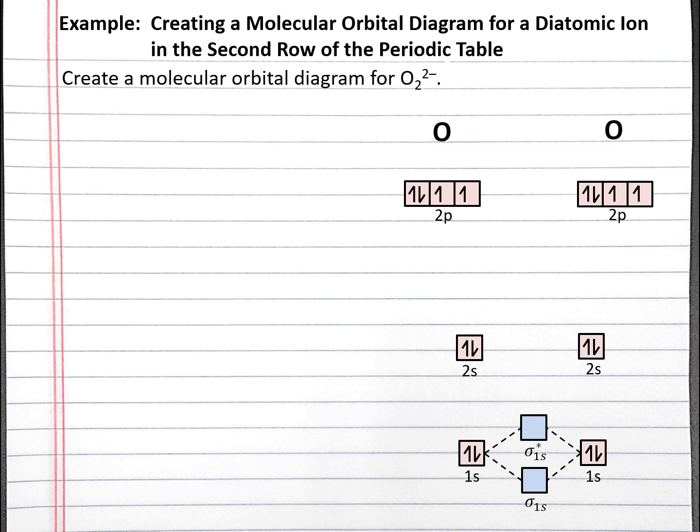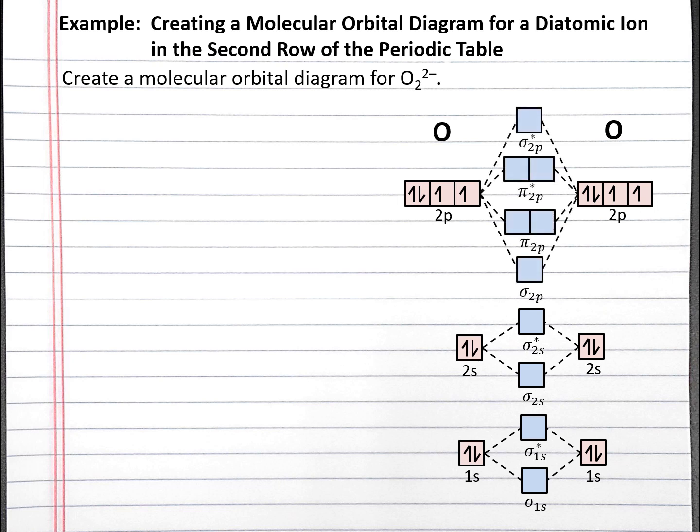We can also combine the 2s orbitals from both oxygen atoms to produce the sigma 2s bonding and sigma 2s antibonding molecular orbitals. When we combine the three 2p orbitals from both oxygen atoms, we create six new molecular orbitals: one sigma 2p bonding, one sigma 2p antibonding, two pi 2p bonding, and two pi 2p antibonding molecular orbitals.